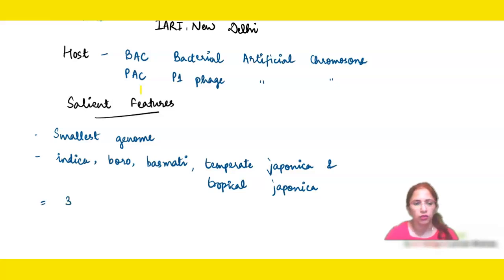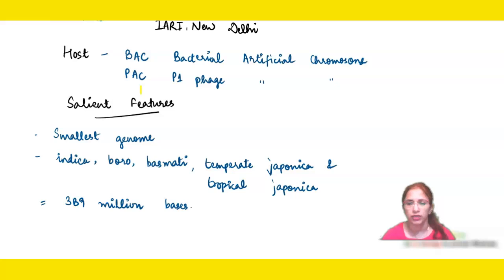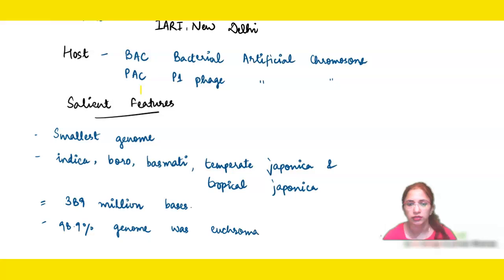The rice genome was made up of 389 million bases — an important point to remember. 98.9% of the genome was euchromatin in nature, meaning it was transcriptionally active. Being in unfolded form, euchromatin participates in gene expression, so 98.9% of the rice genome actively contributed to gene expression.